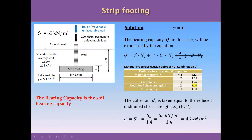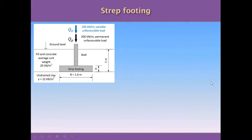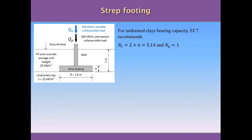Remember that we are calculating the bearing capacity of the soil — the capacity of the soil to take and spread loads from the foundation. For undrained clay, following Eurocode 7, the coefficient Nc is equal to 2 plus pi, which is 5.14, and the coefficient Nq is equal to 1.